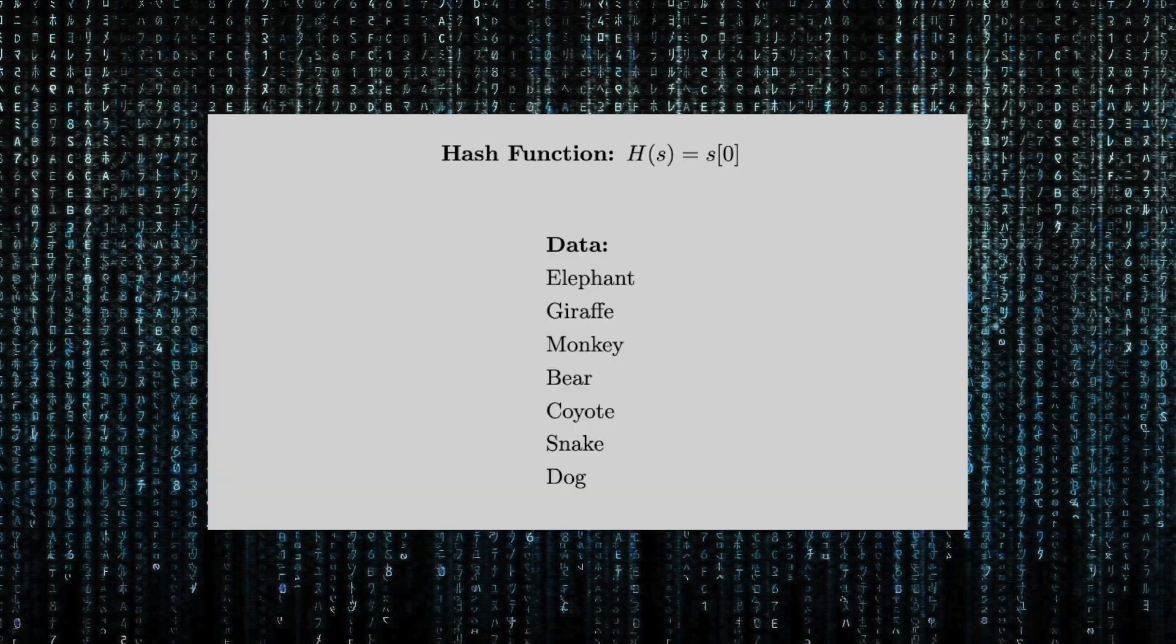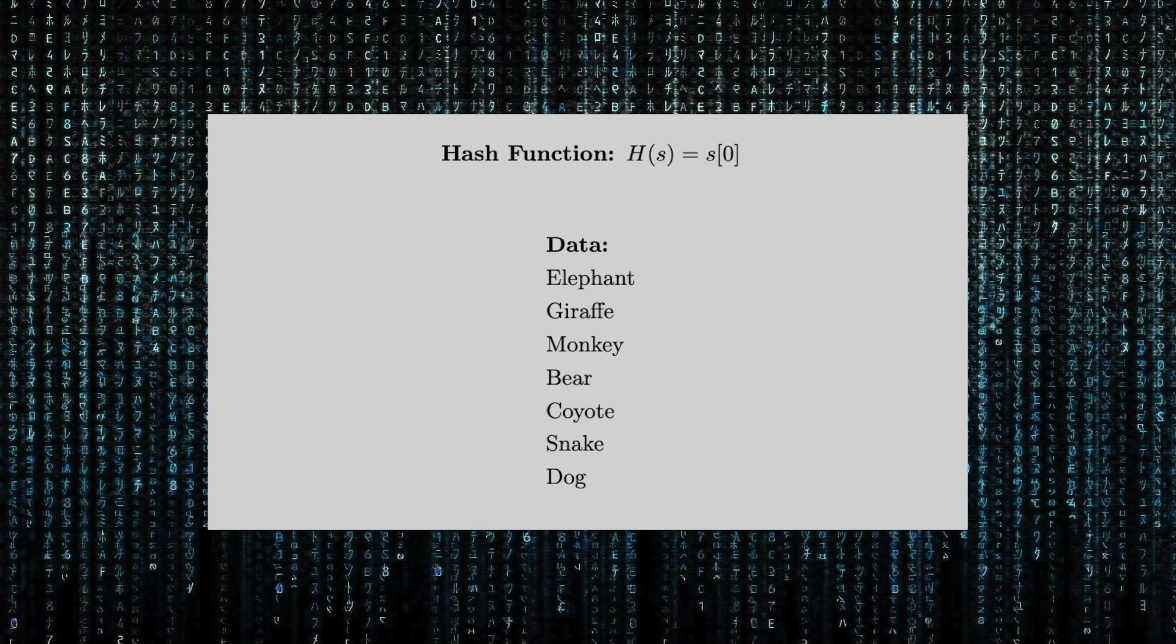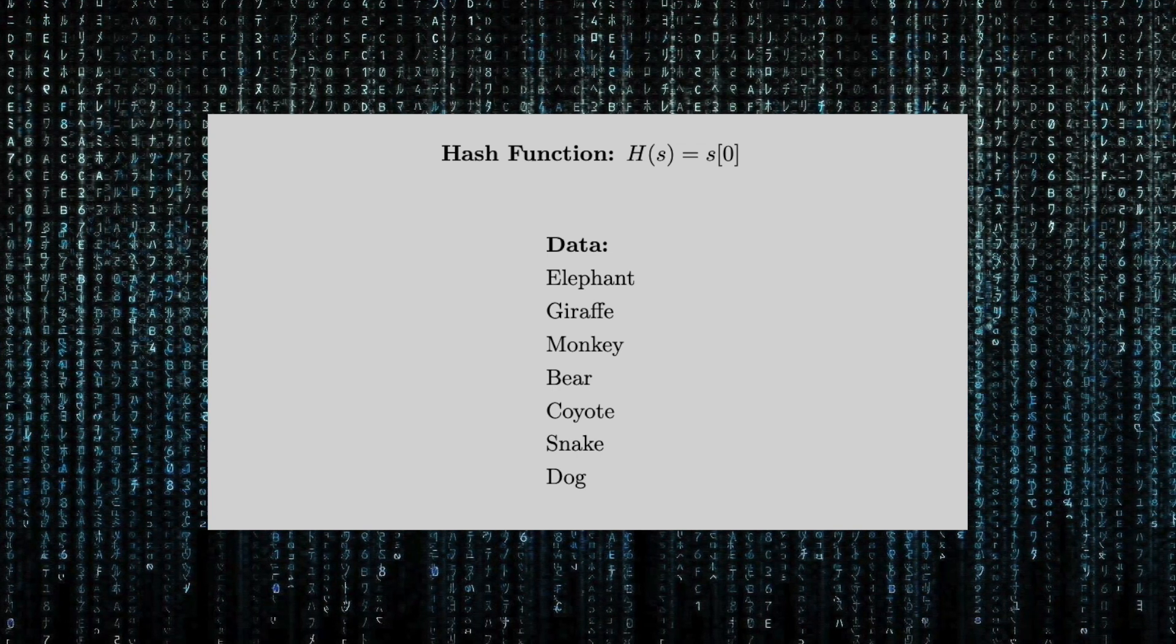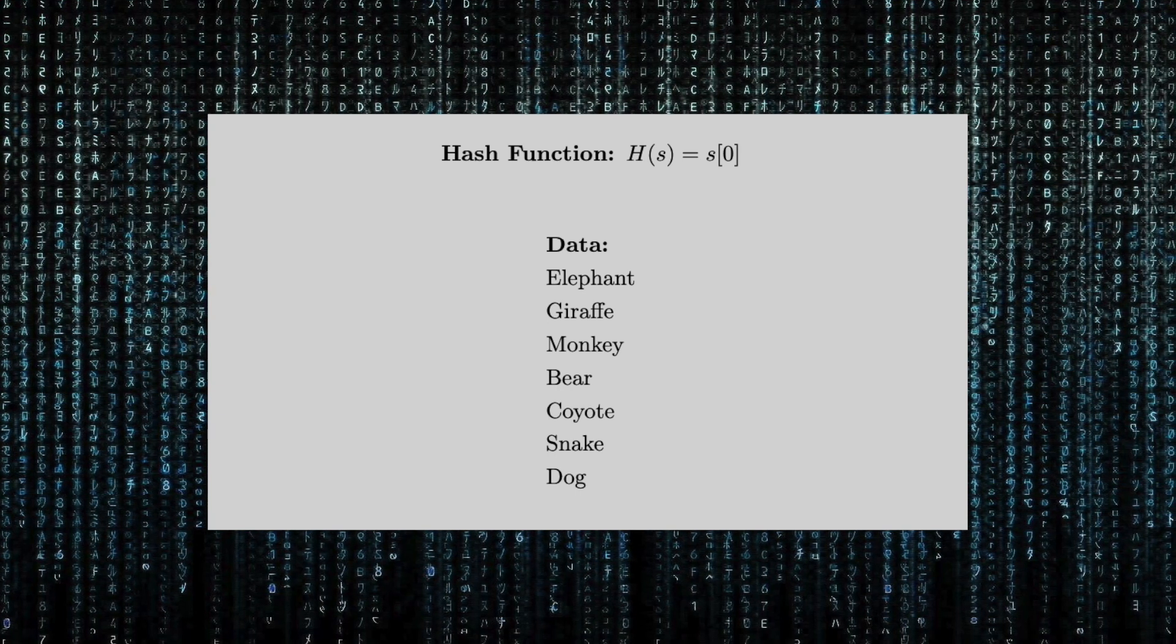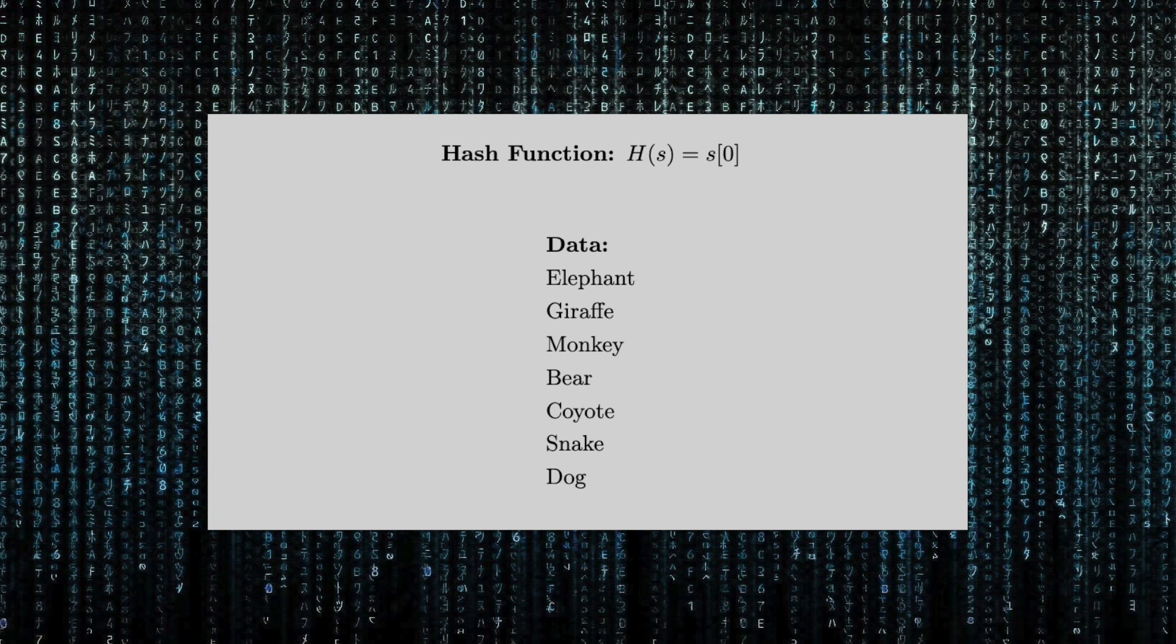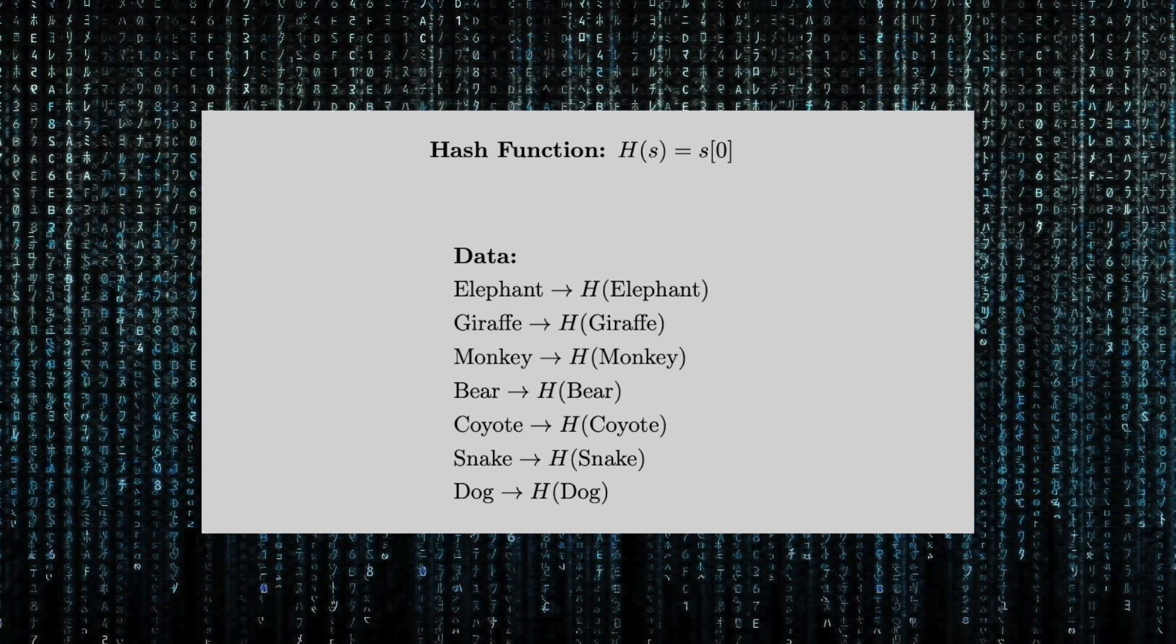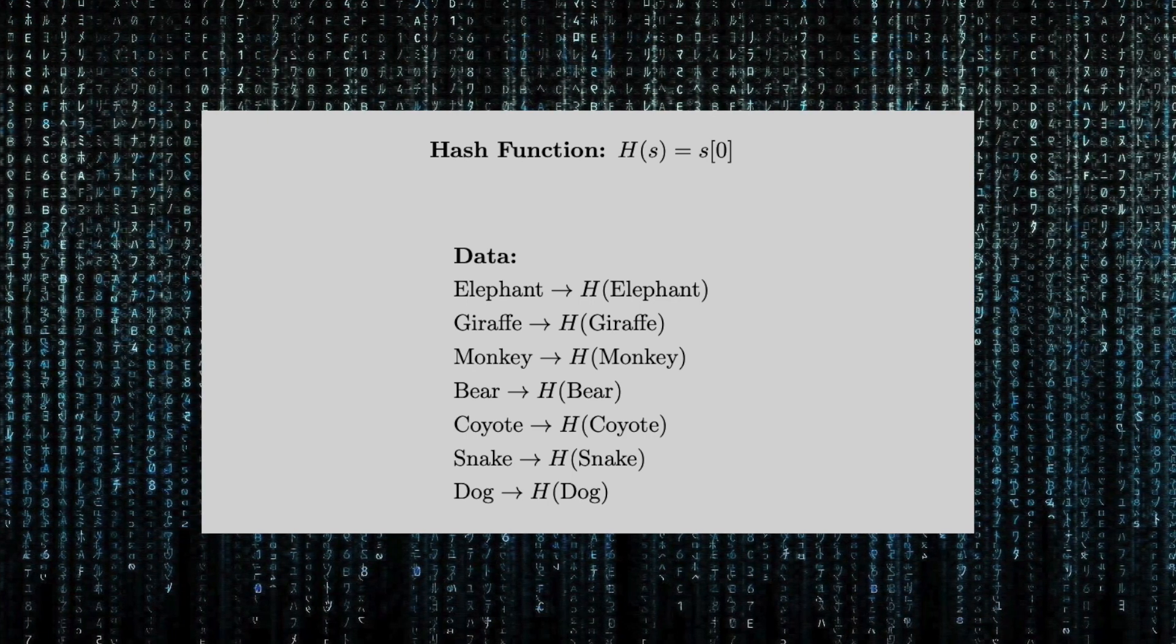Let us look at a simple hash. Here we have our hash function h. All hashes are defined by a hash function that takes a data point and produces a hash key. s denotes the data point that will act as the input to our hash function. Here we also see that our data points consist of animal names. Now, we'll hash our data by taking each data point as the input to our hash function and noting the resulting hash key.